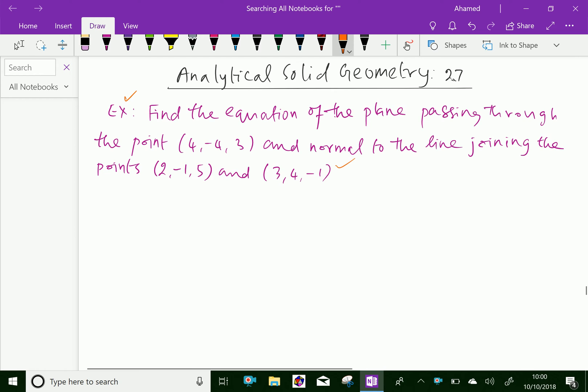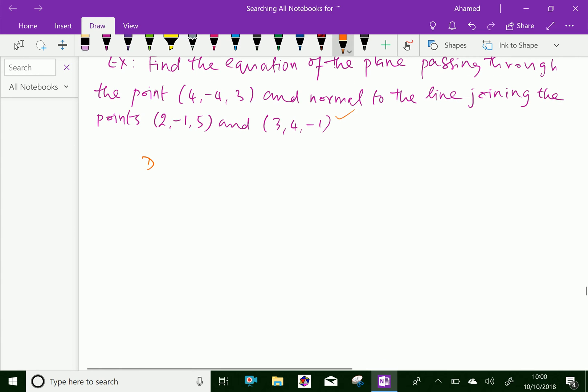Here, direction ratios of the normal to the plane. The normal to the line joining the two given points. So we have to get it like 3 minus 2, 4 minus minus 1, that is 4 plus 1, and minus 1 minus 5.